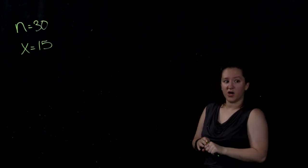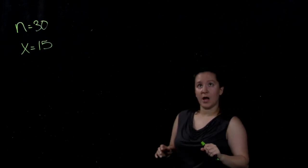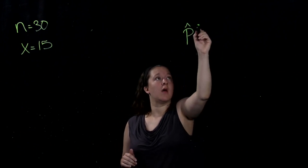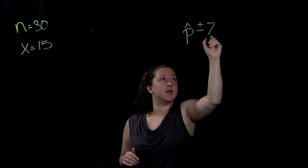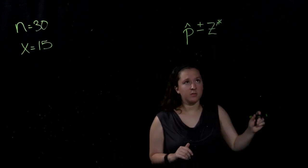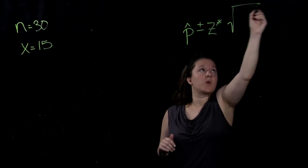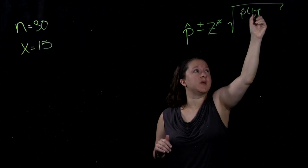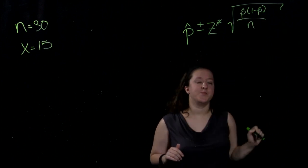The formula for constructing a confidence interval for a population proportion is p hat, so the sample proportion, plus or minus the z multiplier times the standard error, which is equal to the square root of p hat times 1 minus p hat divided by n.